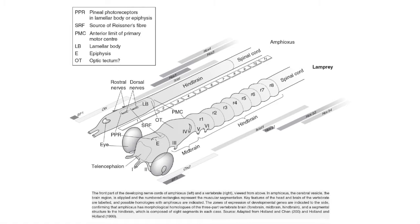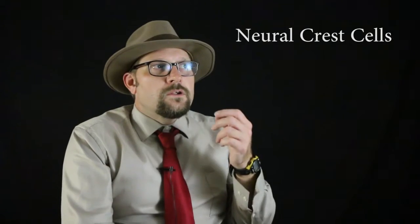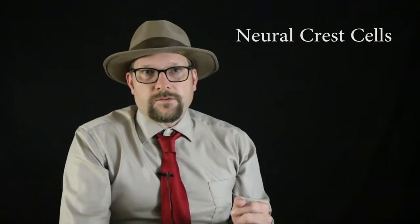Recent studies of the genetic makeup of amphioxus compared to primitive vertebrates like lampreys have shown that there are similar genes which are expressed in the differentiation of the nerve cells, which through amplification lead to the formation of the forebrain, midbrain, and hindbrain regions in vertebrates. However, amphioxus and sea squirts do not have what are called neural crest cells, which appear to be unique to vertebrates.